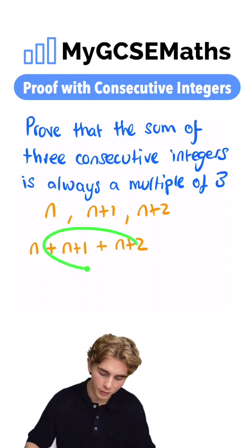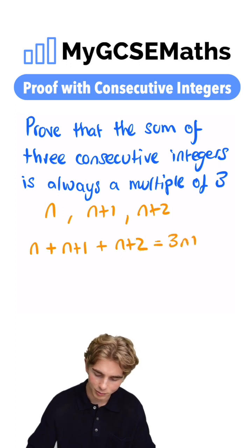Now, how can we simplify this? If we collect our like terms, we can write this as three n plus three.